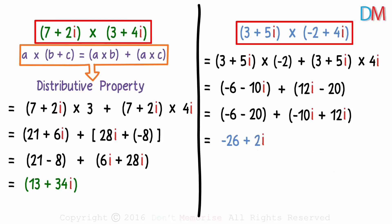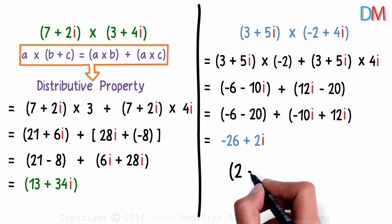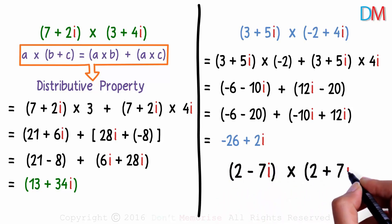In both the cases, we saw that a product of two complex numbers gave us another complex number. Is that always true? Keep this question in mind and try solving the next example. Try multiplying 2 minus 7i with 2 plus 7i. We will see the solution in the next part of the video.